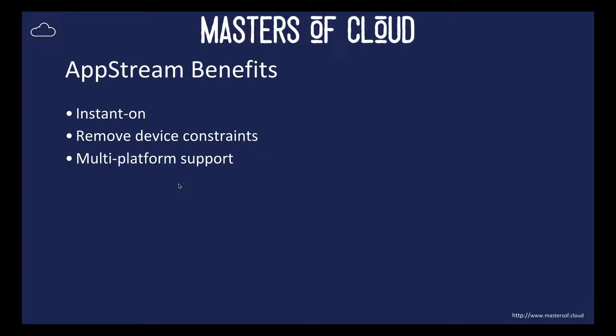We've got multi-platform support. We can take our existing applications and start streaming them to browsers without any app modifications. If it's a native Windows application, we can install it and deliver it to Android, Mac, and Windows endpoints, so long as they have an HTML5-enabled browser. It also makes updates easy because the app is centrally managed on Amazon AppStream — updating the app is as simple as providing a new version of that app.